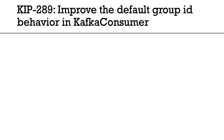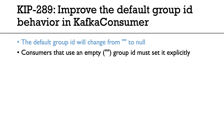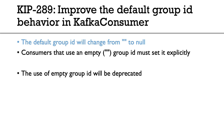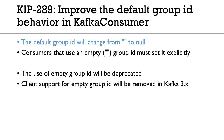That's it for internal changes. Now let's look at the changes for Kafka clients. Number one is important: the default group ID used to be the empty string, but now it's becoming null. Consumers that used the empty string group ID must now set it explicitly. The use of the empty group ID will be deprecated over time, and client support for empty group ID will be removed in Kafka 3.x. So try not to use the default group ID — define a normal group ID.